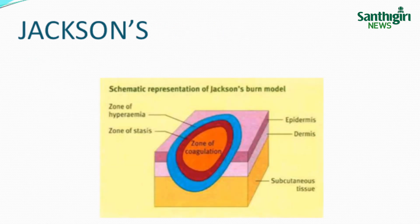The zone of coagulation is at the center of the wound, where no viable cells remain. Surrounding it is the zone of stasis, characterized as a mix of viable and non-viable cells. This area represents the zone at risk due to the onset of capillary vasoconstriction and ischemia. This zone may undergo necrosis with hypoperfusion, desiccation, edema and infarction. With proper wound care management and fluid resuscitation, however, these changes may be reversed.